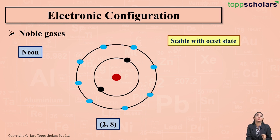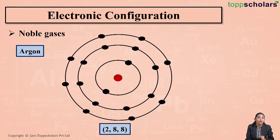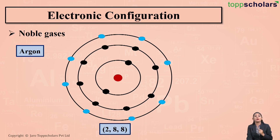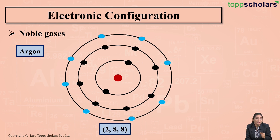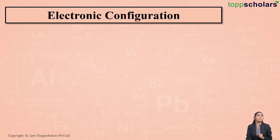What about argon? The electronic configuration of argon is 2, 8, 8. There are 8 electrons in the outermost shell of argon. Since argon has 8 electrons in its outermost shell, argon is stable with the octet state. But what about metals?